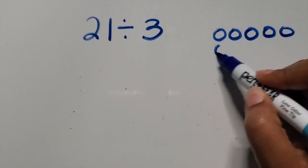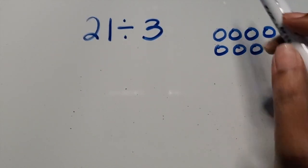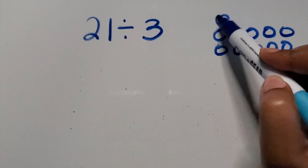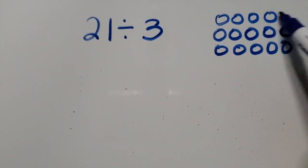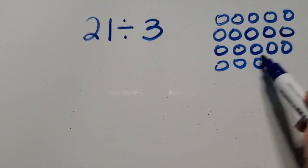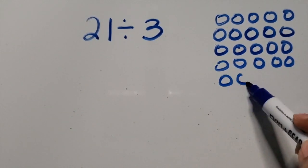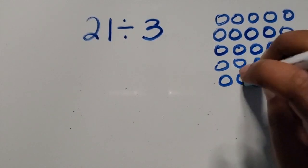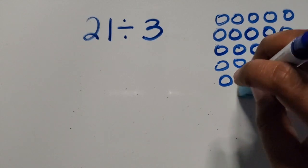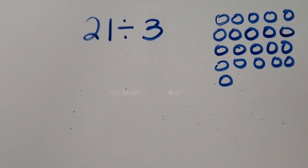We have five there. Let's do some up here. There's 15. 20. So we have 5, 10, 15, 20, 21.